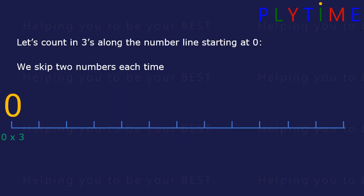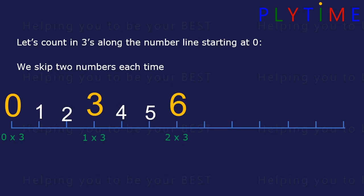Zero — zero times three is zero. Three — one times three is three. Six — two times three is six. Nine — three times three is nine.